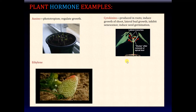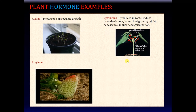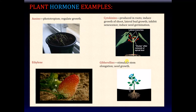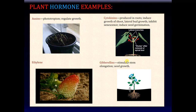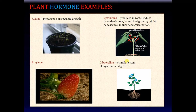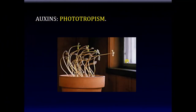Ethylene is apparently the only known gaseous hormone — it promotes ripening of fruits. Gibberellins perhaps get the prize for the coolest name; they stimulate stem elongation and seed growth, among other things. To get an appreciation of how these hormones work, we shall take a closer look at auxins and how they produce their effect of phototropism.